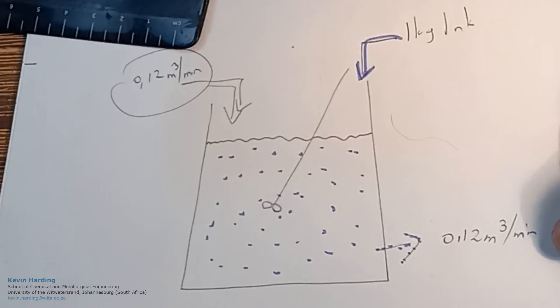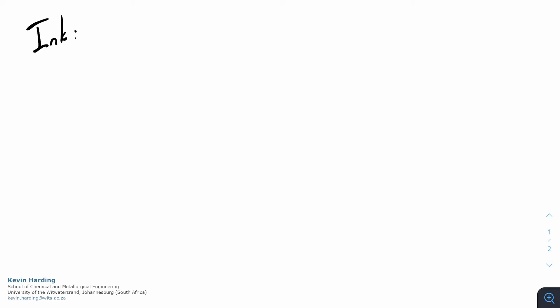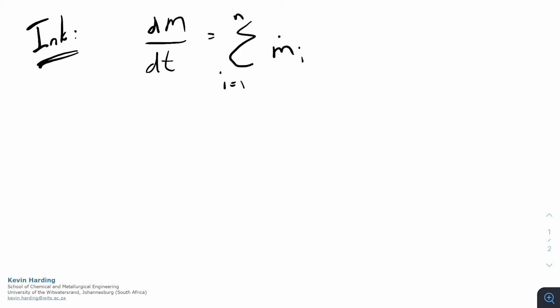So what is the mass balance for the ink? We again start with dm/dt equals the sum of mass flows. This is not steady state, so the dm/dt term must remain. Nothing new goes into the tank after t=0 — all ink is already inside. But there is a mass flow out with the water stream. So we are left with dm/dt equals 0 minus m_out.